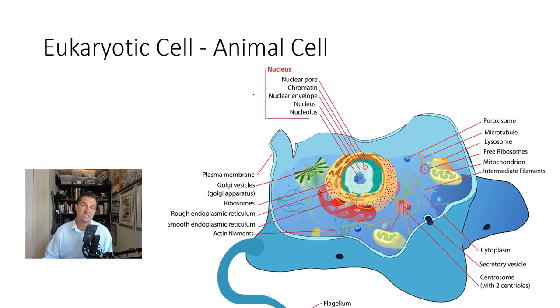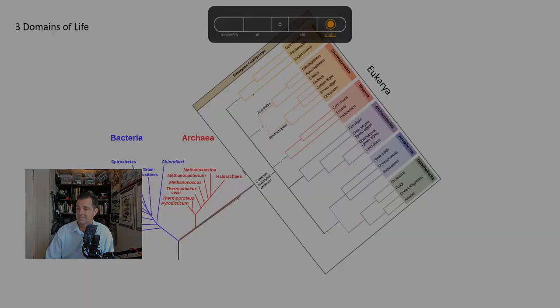There are other organelles in an animal cell that are important. But we're going to come back to those later, because many of them are shared by what we see in plant cells.